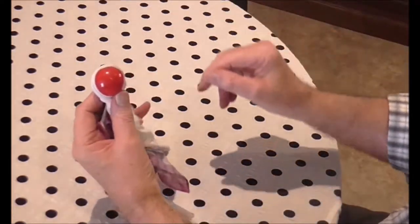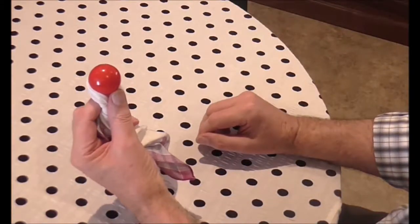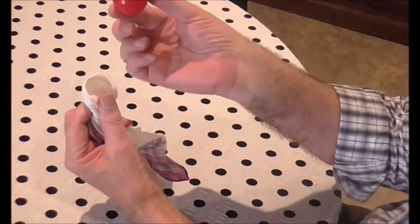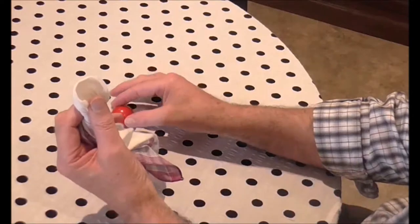Then with a little magic pass you push with your thumb so it appears that the ball is coming right through the handkerchief. It's really just at the back of the handkerchief. Then you shake the handkerchief out to show that it's complete in all respects.